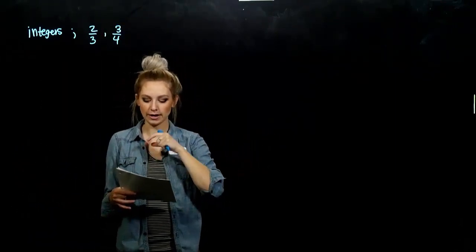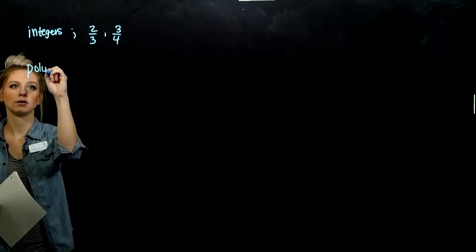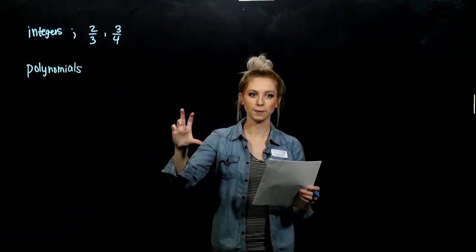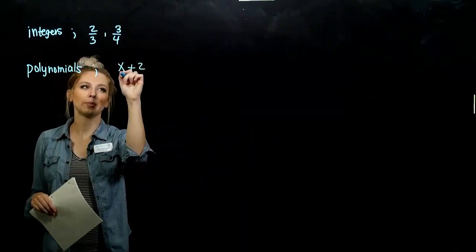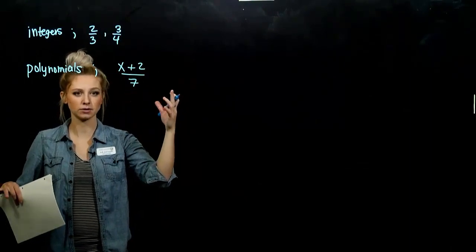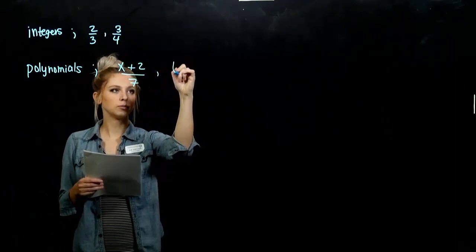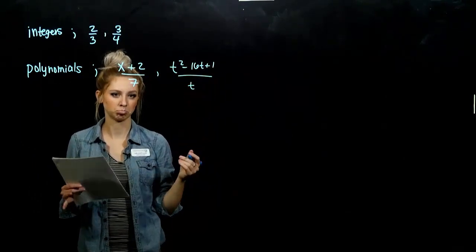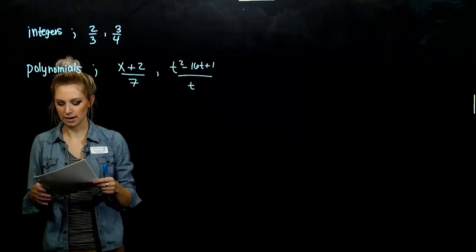Rational expressions are quotients of polynomials. So it does tie in to our last chapter — still dealing with polynomials, but now we're looking at a quotient, or a fraction of two polynomials. So what would it look like? A polynomial up top and a polynomial down below. Something a little more exciting: t squared minus 16t plus one, all over t. Again, we're looking at a fraction, so it is a rational expression.